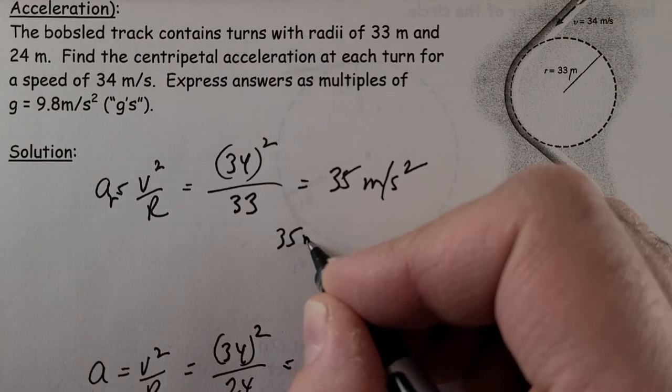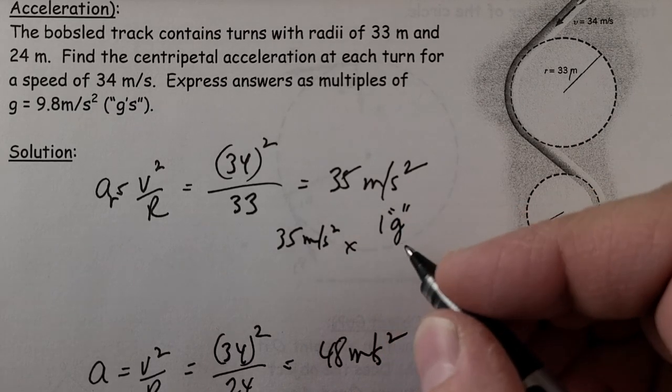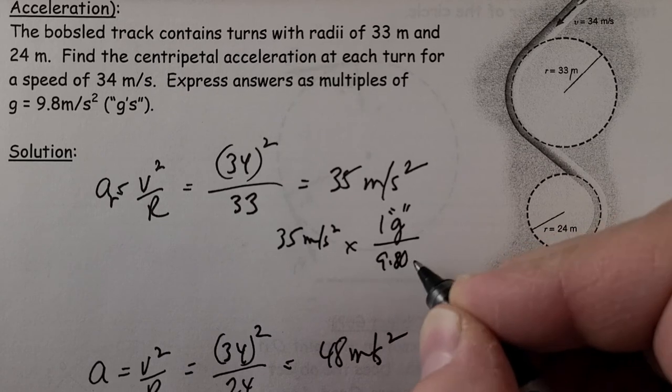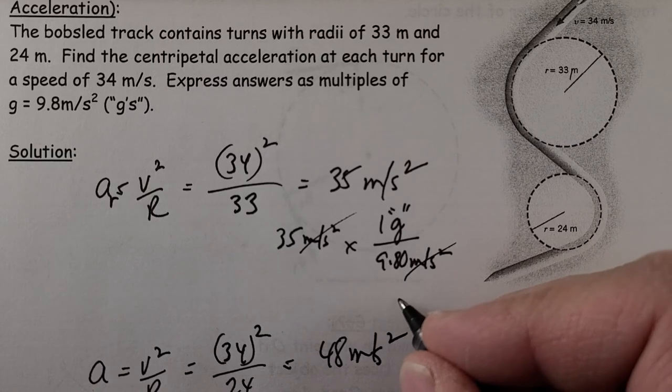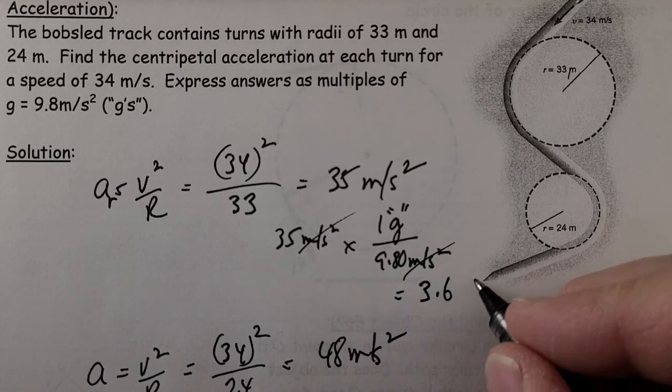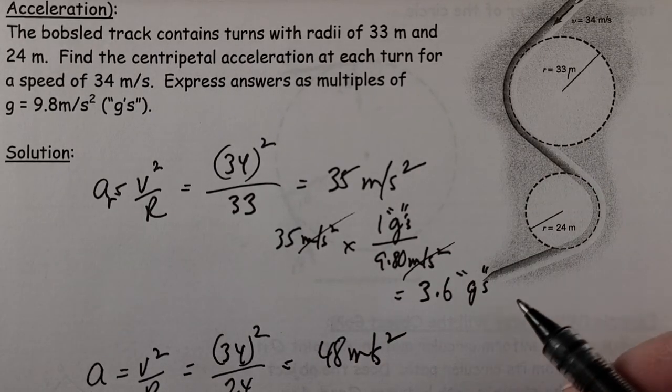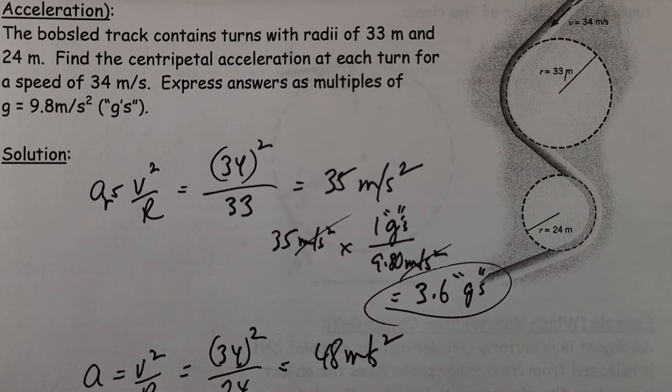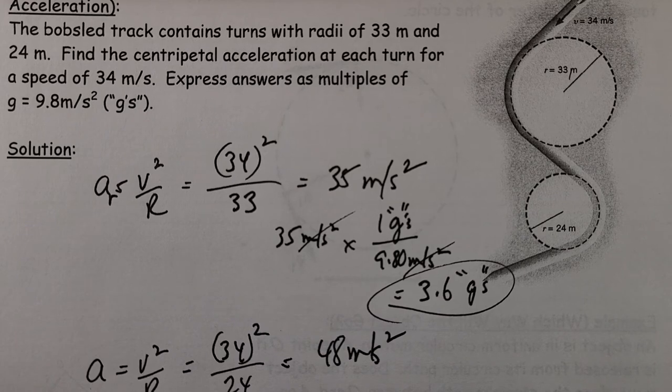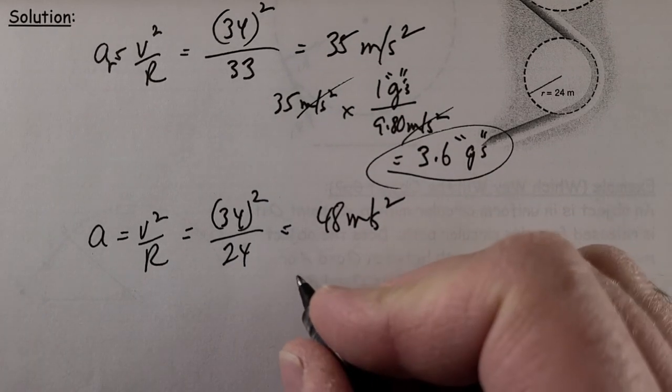So let's see, it's 35 meters per second squared. We know that one g is 9.8 meters per second squared because that's what we experience on Earth. So if we cancel that off, we get 3.6 g's. That tells us that going around this corner, we would feel as if it was 3.6 g. The effect is if we were on a planet that had an acceleration due to gravity 3.6 times 9.8, 3.6 times what we feel.